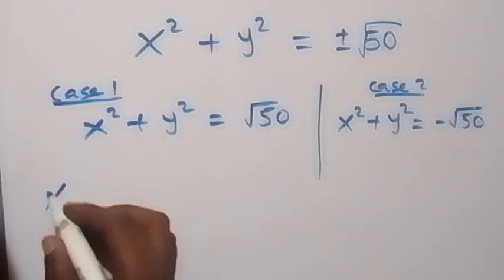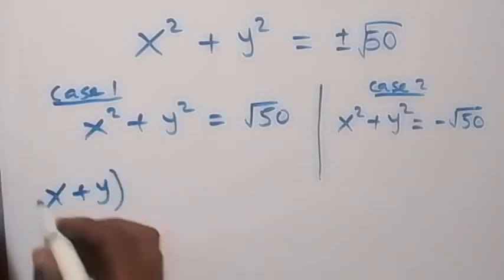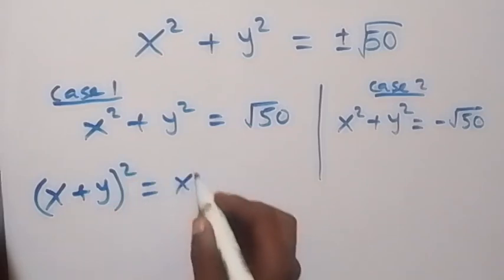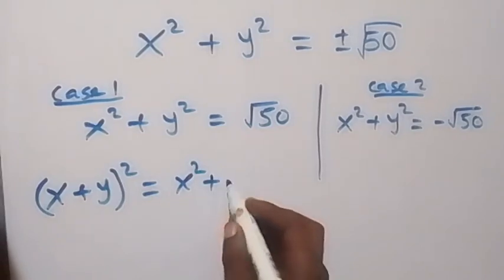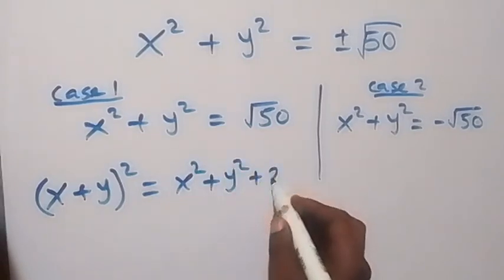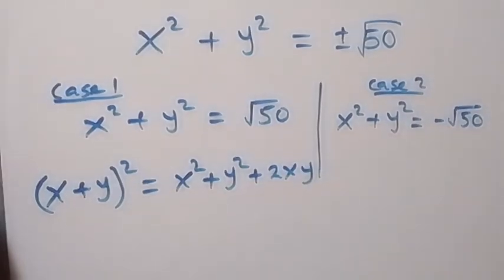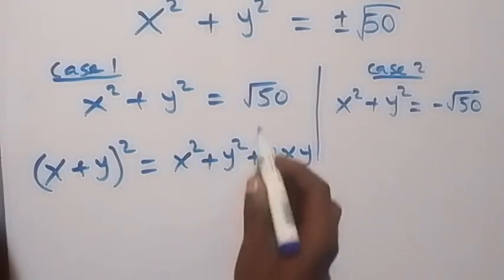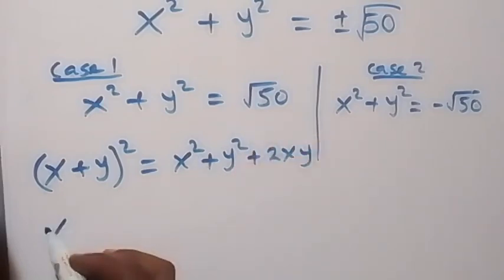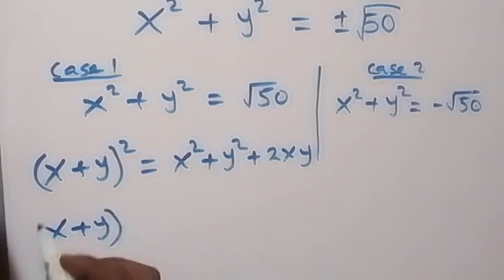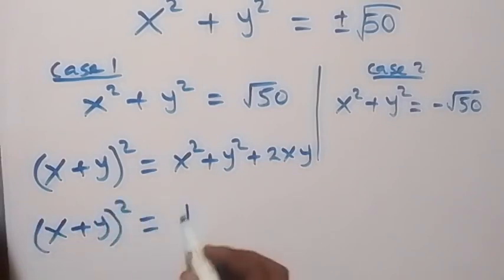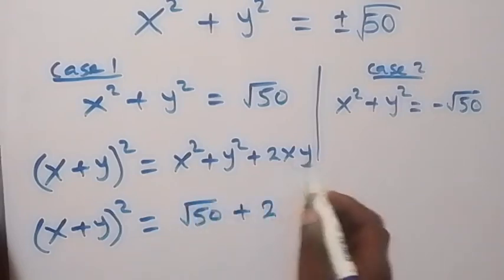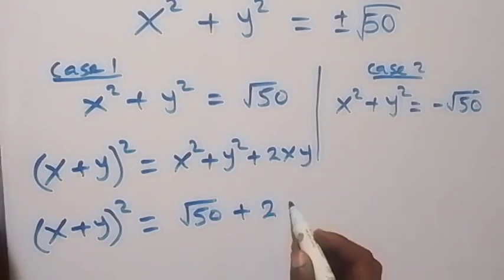For case 1, let's solve first. The expansion of x plus y all squared gives x squared plus y squared plus 2xy. Substituting x squared plus y squared equals root 50, we have x plus y all squared equals root 50 plus 2 times xy, and from equation 2 xy equals root 10.